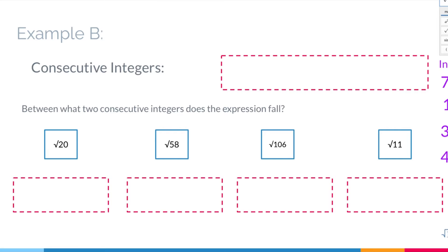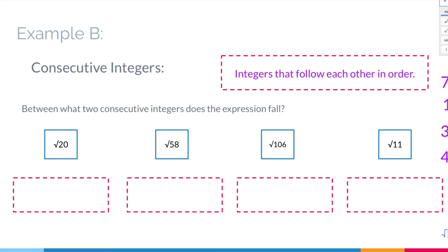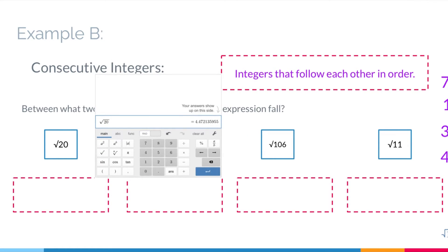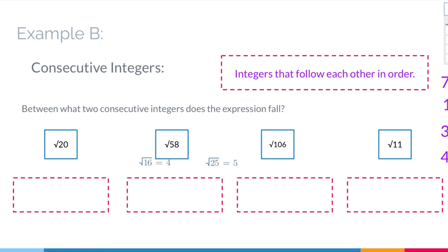Now let's look at Example B, which is about consecutive integers — integers that follow each other in order. The question asks: between what two consecutive integers does this expression fall? First expression is the square root of 20. You can use the Desmos calculator — the square root of 20 is 4.47, so it's between 4 and 5. Or you can figure out that the square root of 16 is 4 and the square root of 25 is 5, and the square root of 20 falls between those. Either way works.